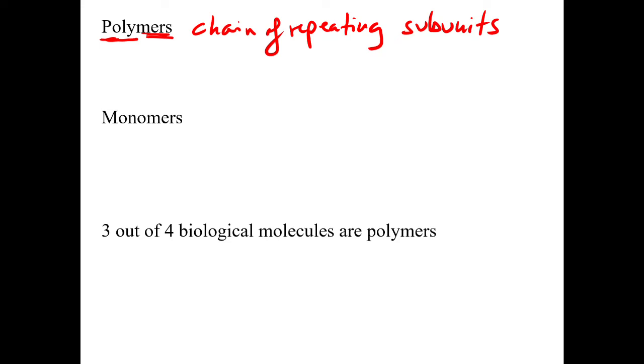Let's write it out: a chain of repeating subunits. A good analogy for that would be like pearls on a necklace. One pearl would be one monomer or one subunit, and then the whole necklace would be the polymer.